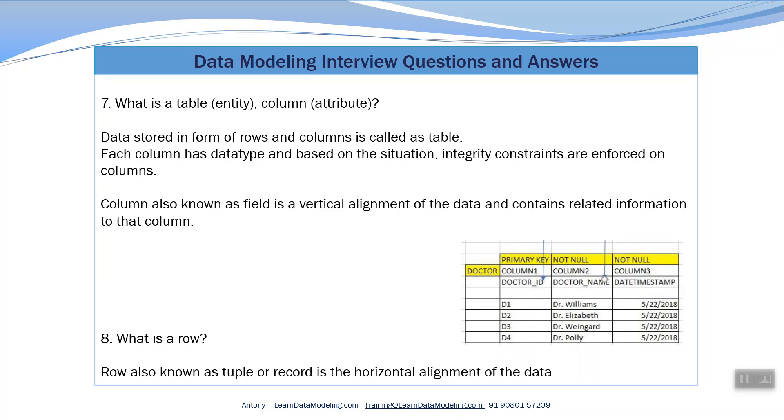Welcome back to data modeling questions and answers. Let me explain what is a table and what is a column. In physical data model it is called as table, and in logical data model it is called as entity. In physical data model it is called as column, and in logical data model it is called as attribute.